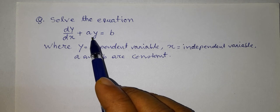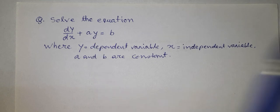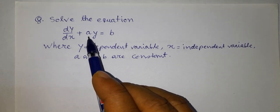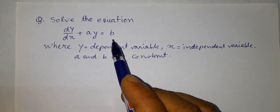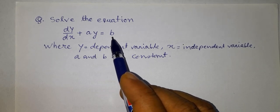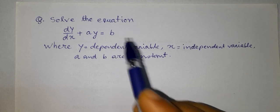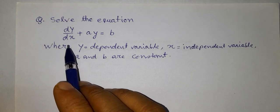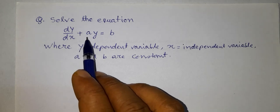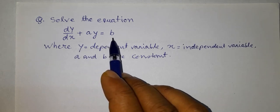Here, the variable y has a constant coefficient, that is a, and here we have another constant that is called the constant term. So this is a first order linear differential equation with constant coefficient and constant term.